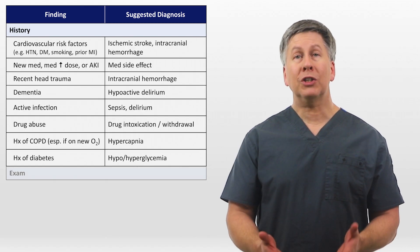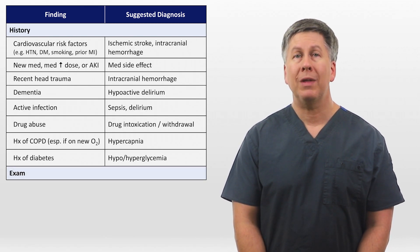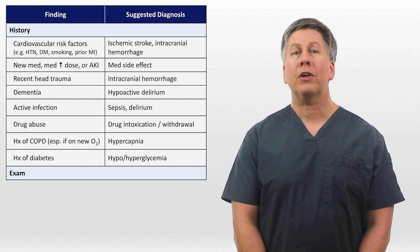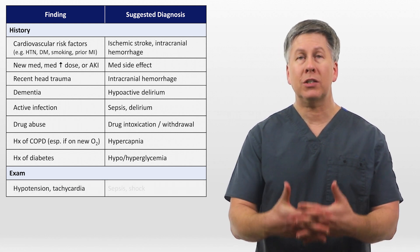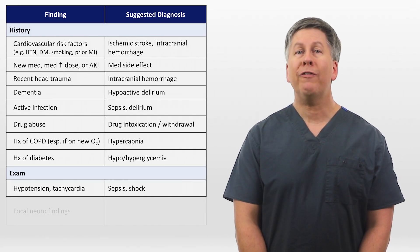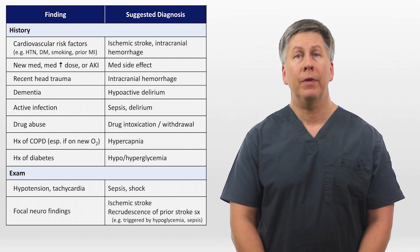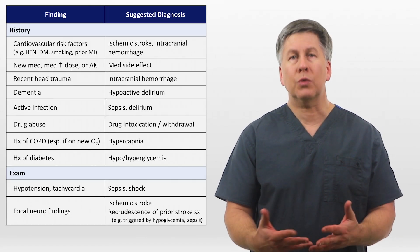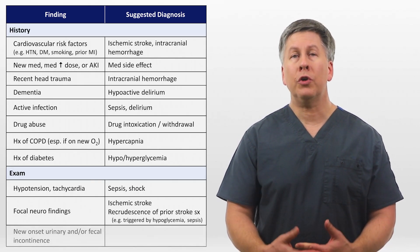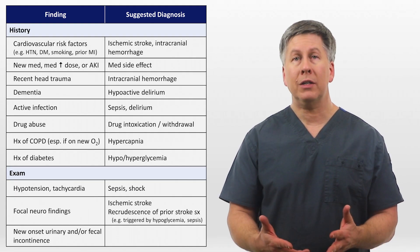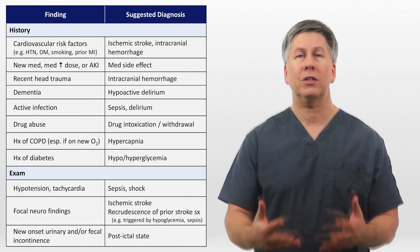The physical exam for an acutely somnolent patient is typically focused on vitals and the neuro exam. The combination of hypotension and tachycardia suggests sepsis and shock, while focal neural findings are most suggestive of an ischemic stroke, though other diagnoses can do this as well. And the new occurrence of urinary and in particular fecal incontinence suggests the patient has experienced an unwitnessed seizure.